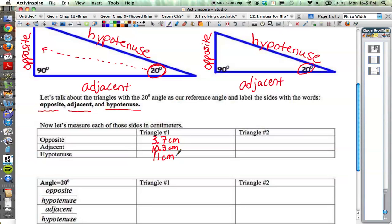In triangle number two, did the same thing. I measured the opposite side, that short side, to be 2.8 centimeters. I measured the adjacent side to be 7.6 centimeters, and I measured the hypotenuse to be 8.1 centimeters.